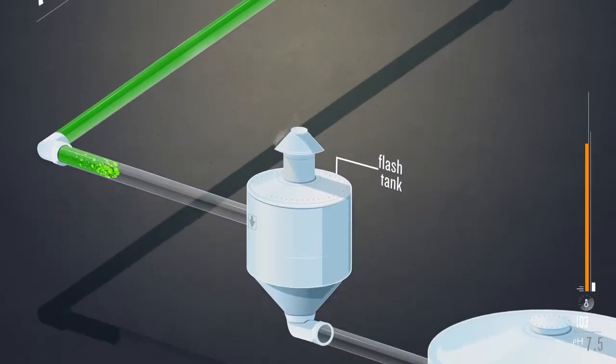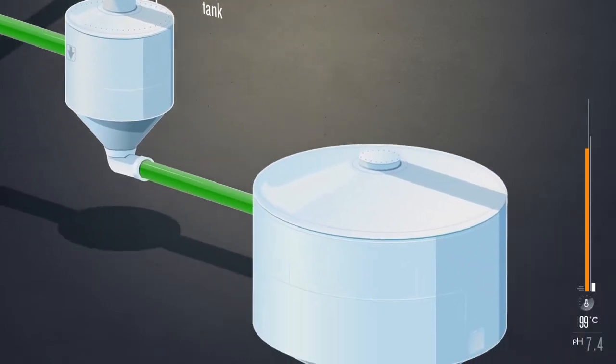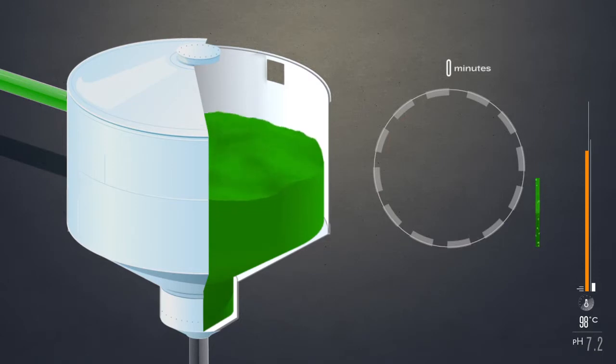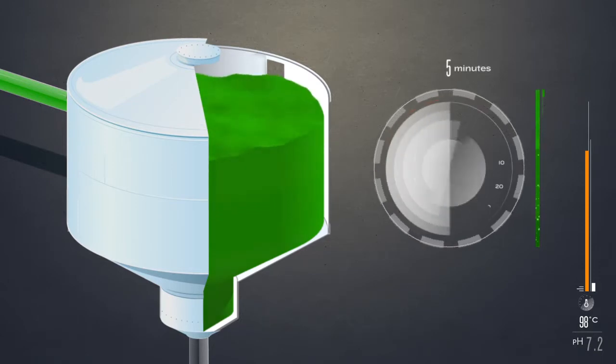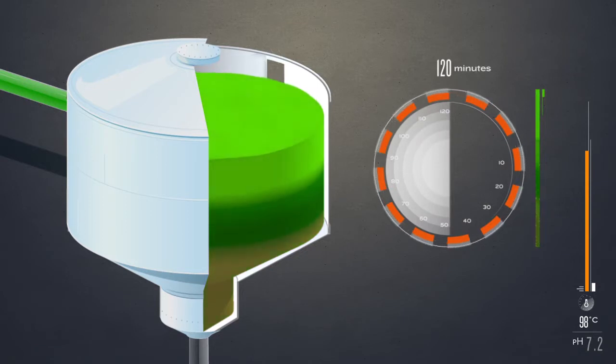Let's take a closer look at the clarification process. Standard clarifier designs produce mixing, which agitates the liquid more than necessary, leading to longer settling and residence times. If there's too much turbulence in the tank, it takes longer for the mud to settle.